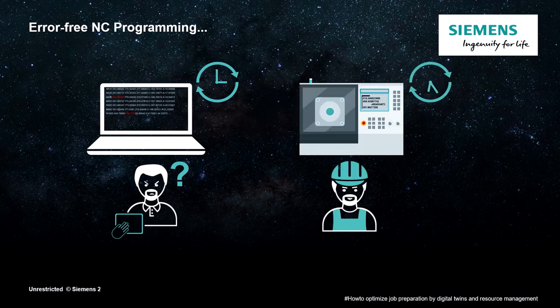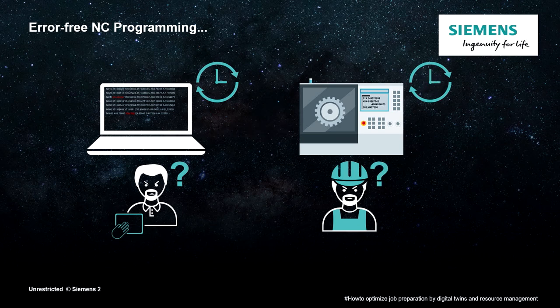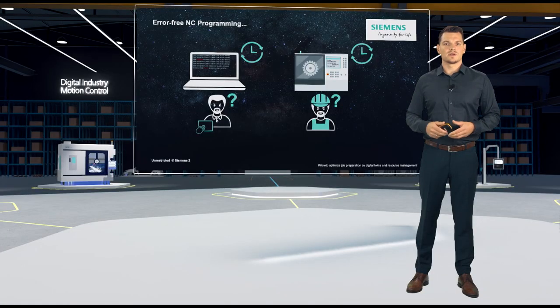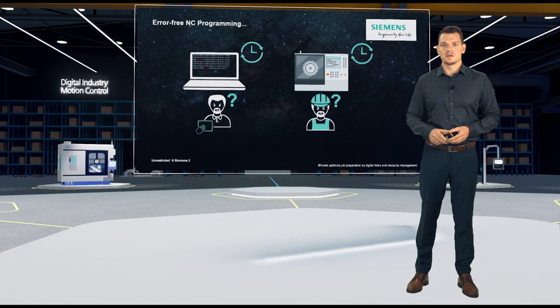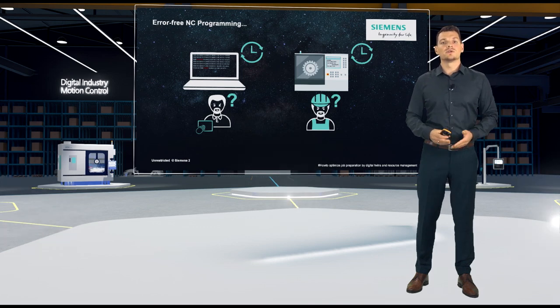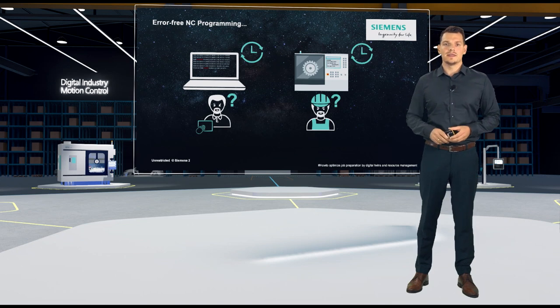Afterwards, the created program is sent to the machine. The operator must run in the program slowly, block by block, so that no collision occurs during this process. He may discover any optimization potential or even errors in the program. In this case, the program then returns to the work preparation and then back to the machine again. Several loops can be performed.